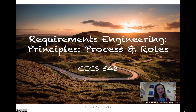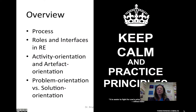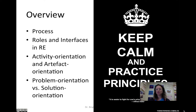Hello everybody, welcome to the next chapter on requirements engineering. Today we'll talk about principles, processes, and roles. First I'll give you a brief overview of the requirements engineering process, then we'll look into the typical roles and what other phases of the software engineering process requirements engineering interfaces with. And then there are two principles: activity orientation versus artifact orientation, and problem orientation versus solution orientation.